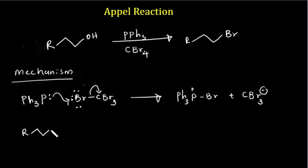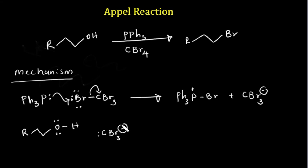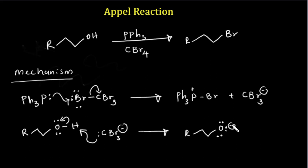Now we have alcohol here. This alcohol has a proton, and this proton is grabbed by the CBr3 minus anion intermediate. CBr3 minus grabs this proton, breaking this bond, and then we have this intermediate — CHBr3 — but that byproduct is less important; this other intermediate is the key one.